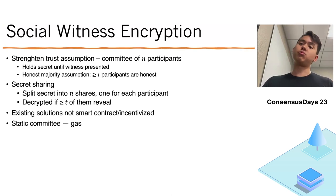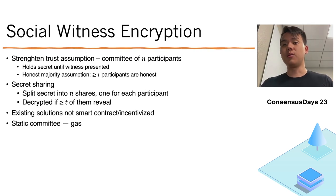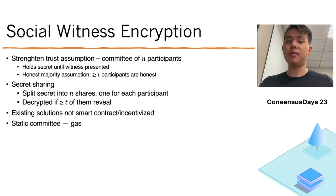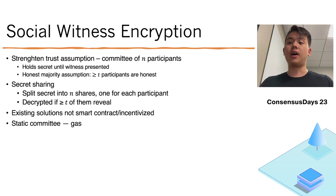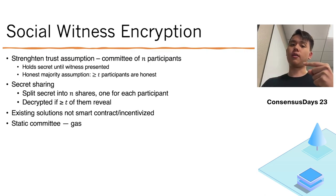Many existing solutions instantiate witness encryption using secret sharing, although most of them are done at the consensus layer, so they're not incentivized or implemented as a smart contract. We want to do this as a smart contract for ease of composability with the rest of the blockchain ecosystem. Once instantiated as a smart contract, the main concern is gas cost, which is why we consider a static committee rather than a dynamic committee — meaning participants hold their secret shares for the duration of the secret, rather than resharing in continuous epochs.